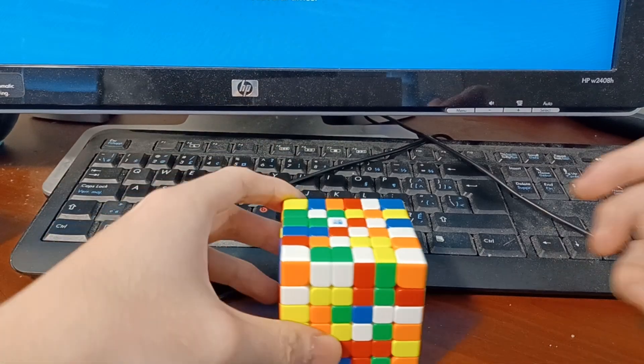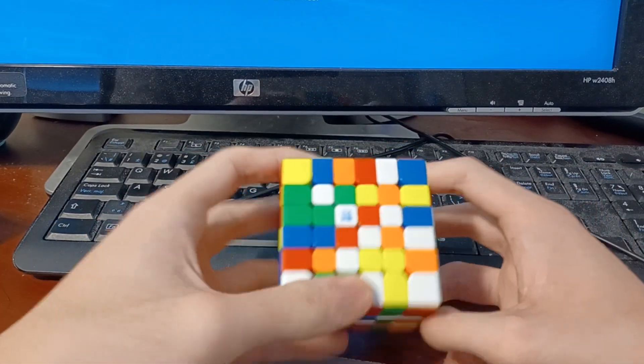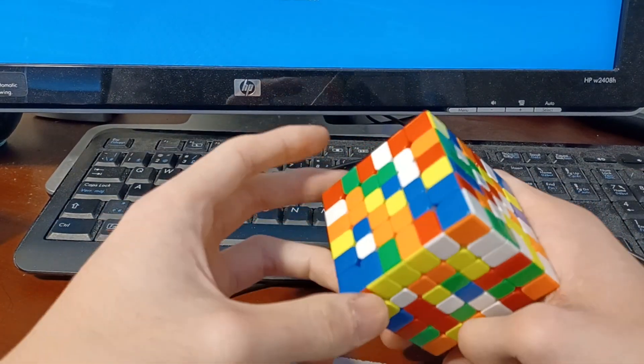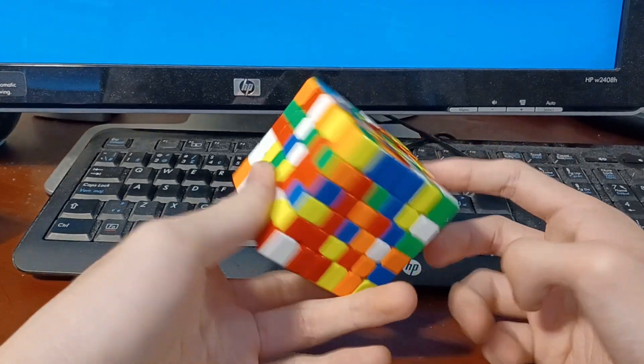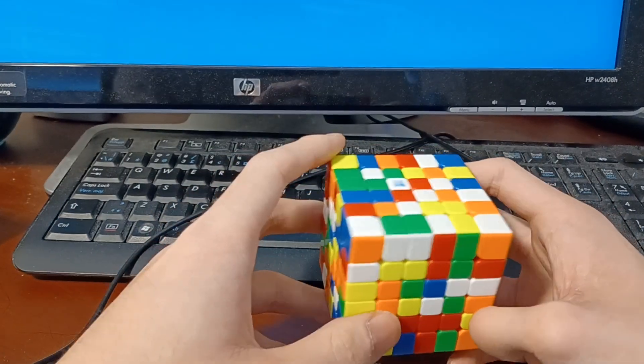So here we have just a hand scramble. And I only solve on white and yellow, or white cross, so I'll be starting with white or yellow.